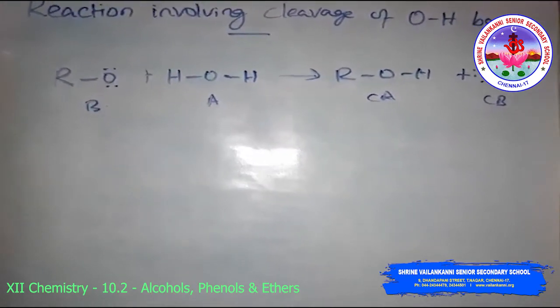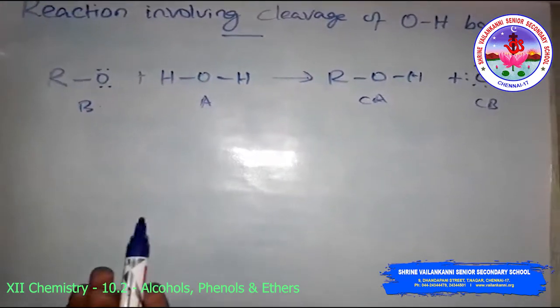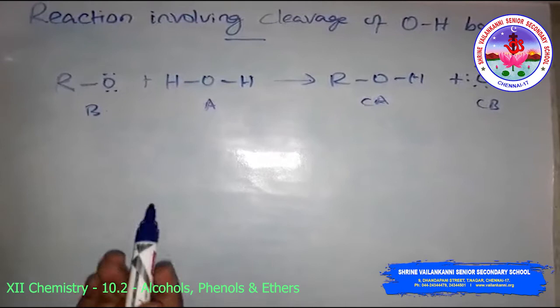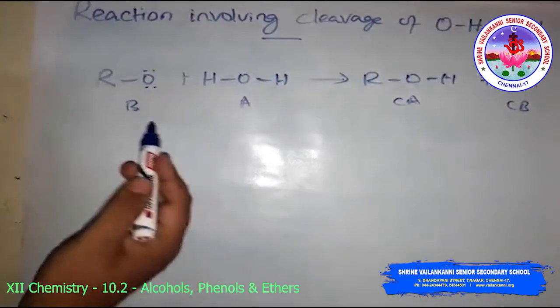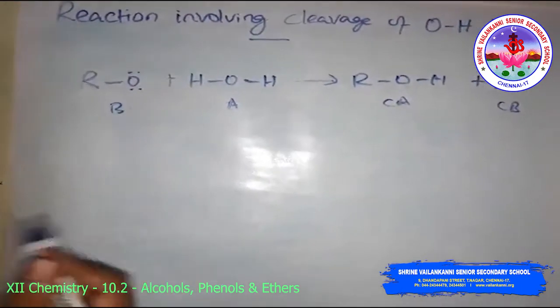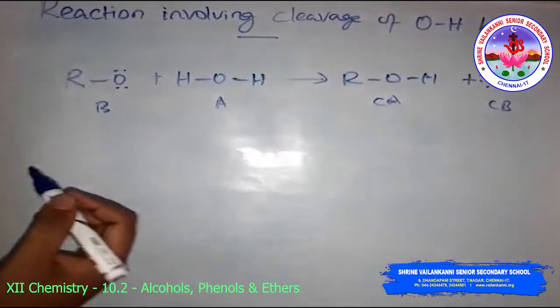Alcohol can also act as a Brønsted base due to the presence of lone pairs of electrons on the oxygen atom, which makes it a proton acceptor.